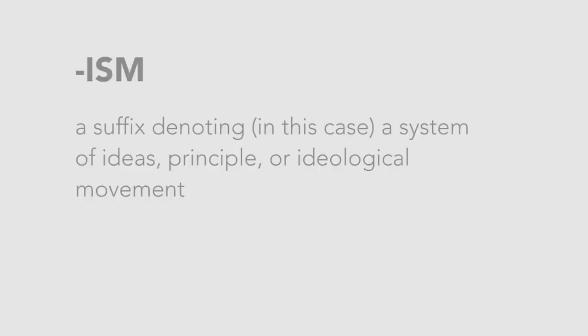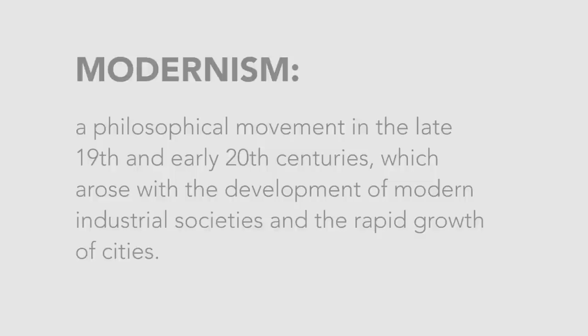Modernism, on the other hand, is a more specific type of thought. With the suffix "-ism", it denotes a system of ideas, principle, or ideological movement — a belief, worldview, set of systems, a way of thinking about life. Modernism was a philosophical movement in the late 19th, early 20th centuries, which arose with the development of modern industrial societies and the rapid growth of cities.